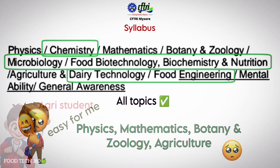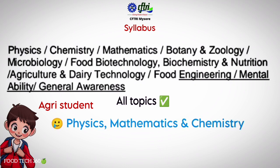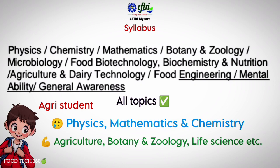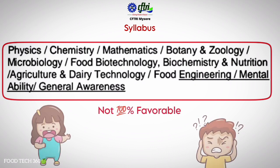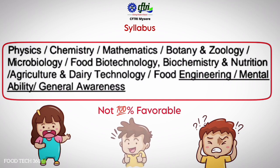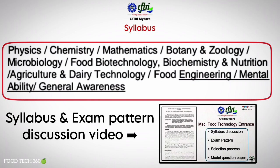An agriculture background student may struggle in physics, mathematics, and chemistry, but at the same time may be strong in agriculture, botany, zoology, and other lifestyle-related topics. So it is clear that this particular syllabus is not 100% favorable for any student, meaning students from any background can attend this exam without fear of much competition. We have made a separate video explaining the syllabus and exam pattern — the link is given in the description.